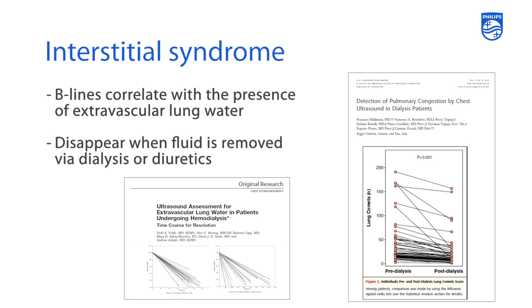The question becomes: how do you differentiate certain patterns of B-lines from others so as to delineate pulmonary edema from ARDS, lung consolidation, or pneumonias?